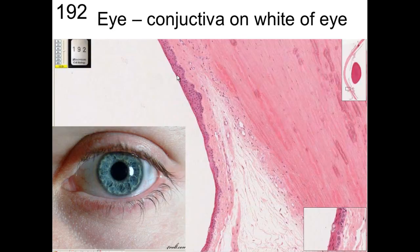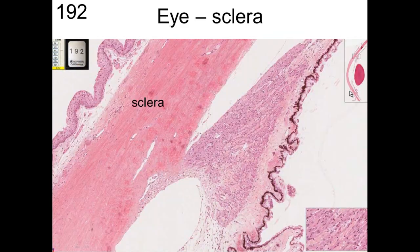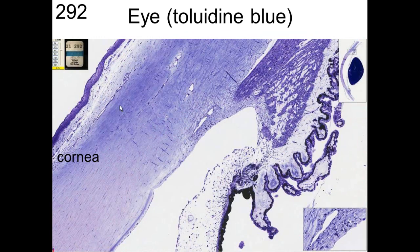Another place with a skin-like covering is the conjunctiva — the white of the eye. We can see the conjunctiva going all the way across, and it sometimes contains goblet cells. Here we have the sclera with conjunctiva going over it, and then the corneal epithelium that covers the cornea.